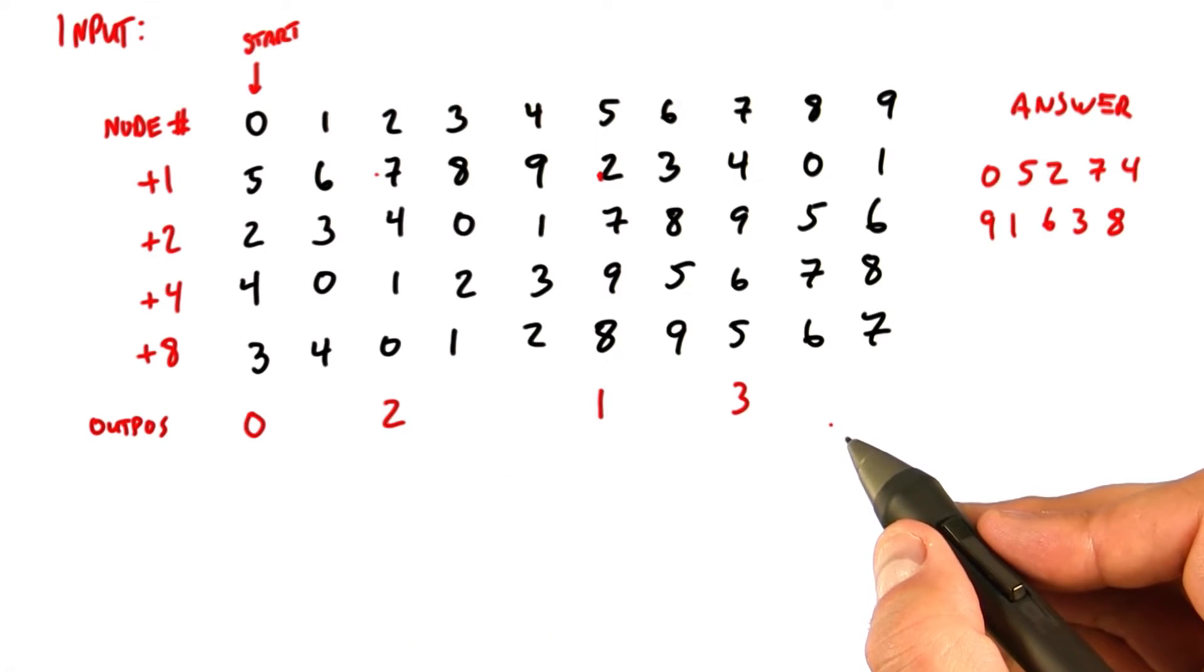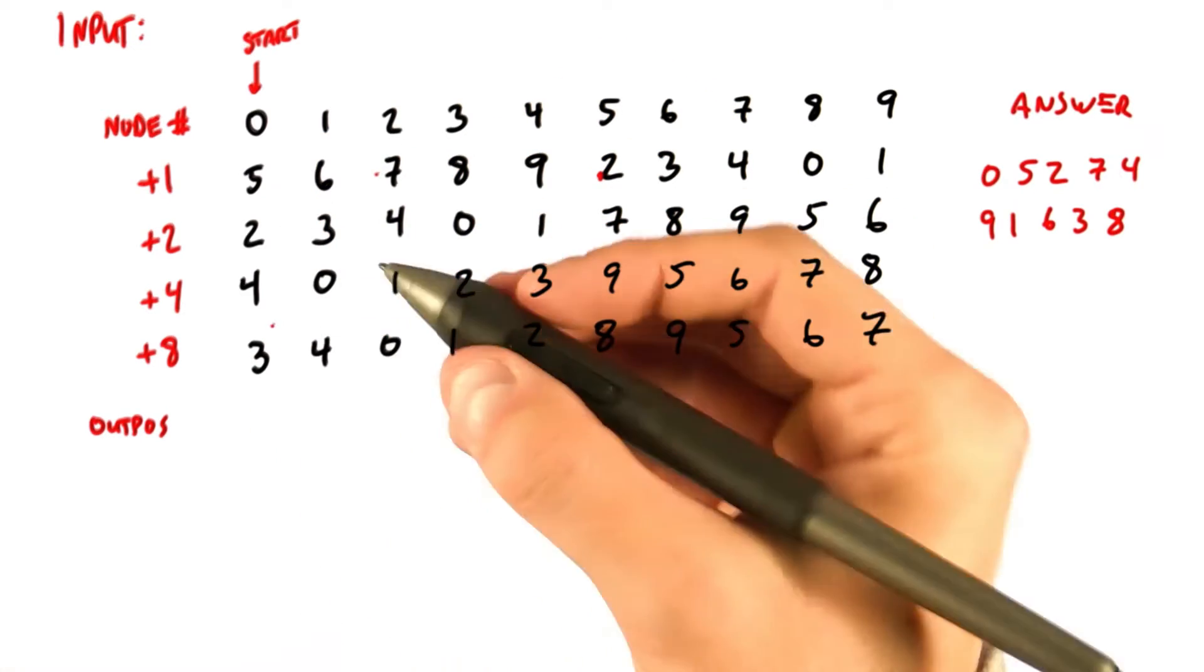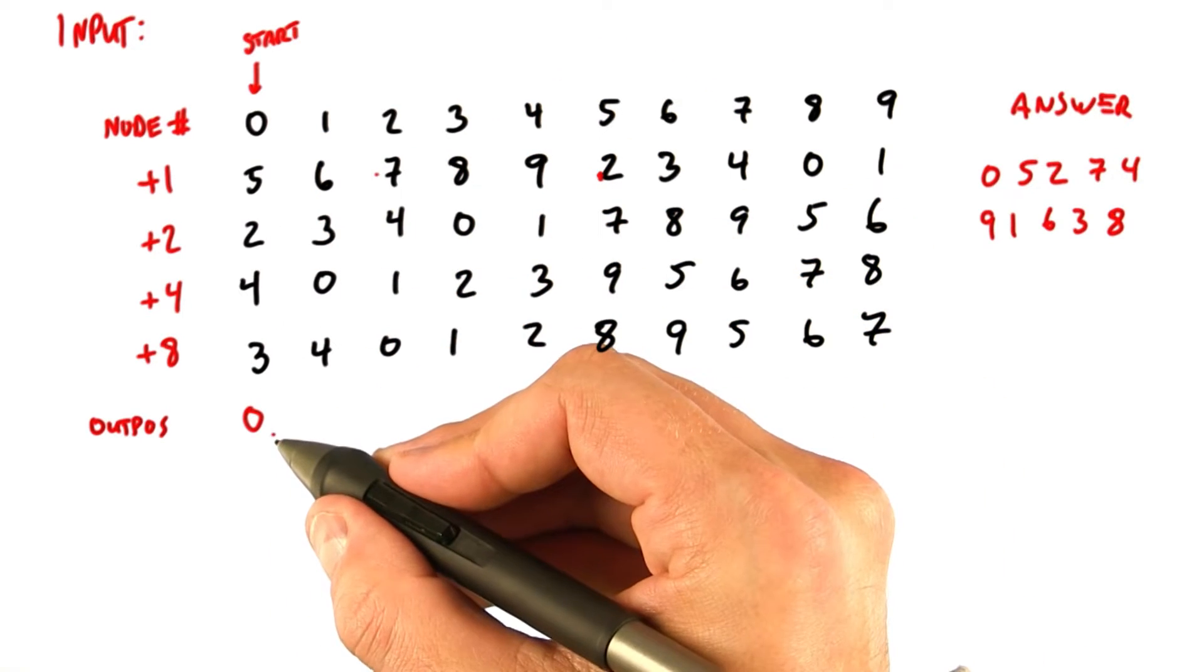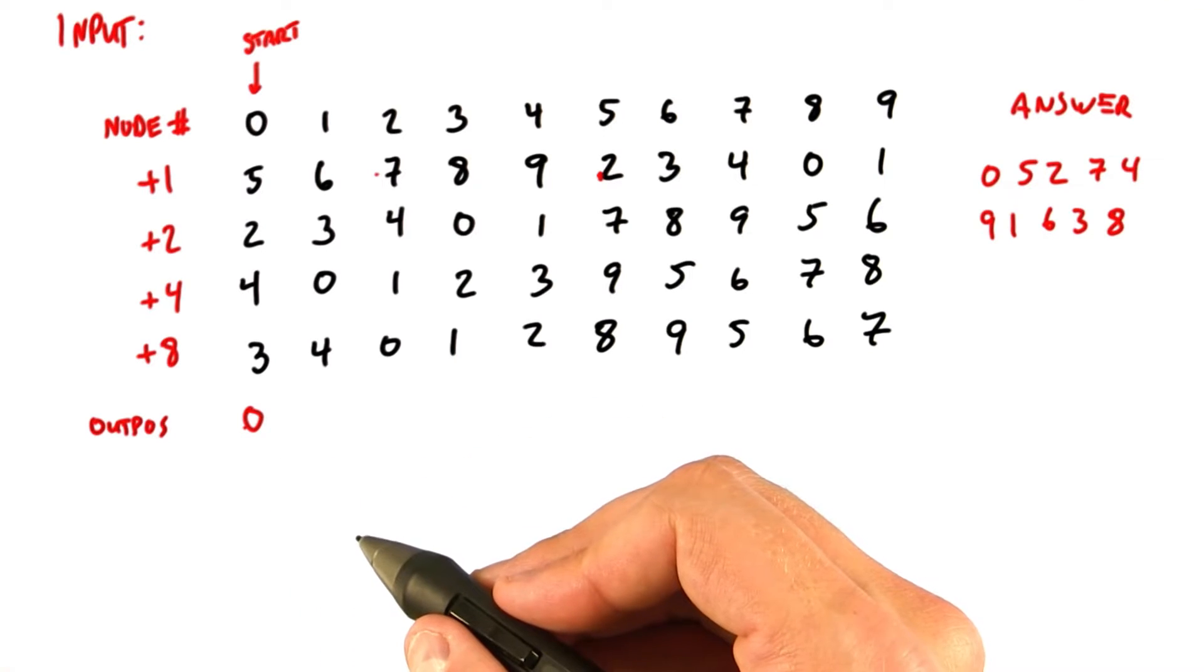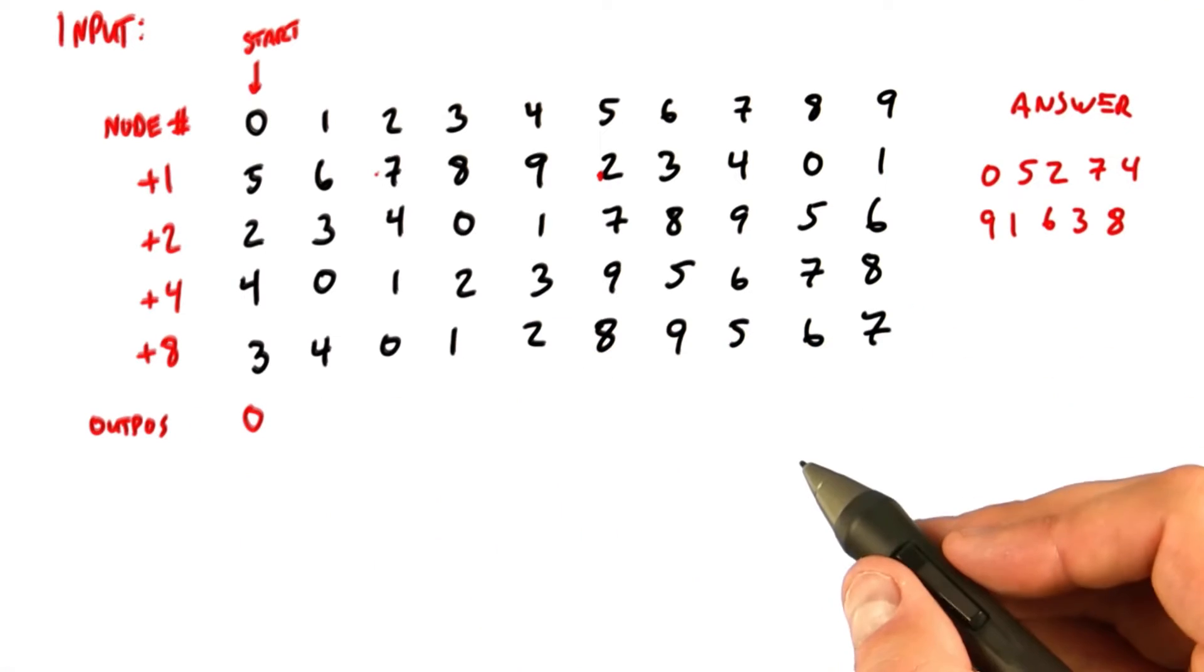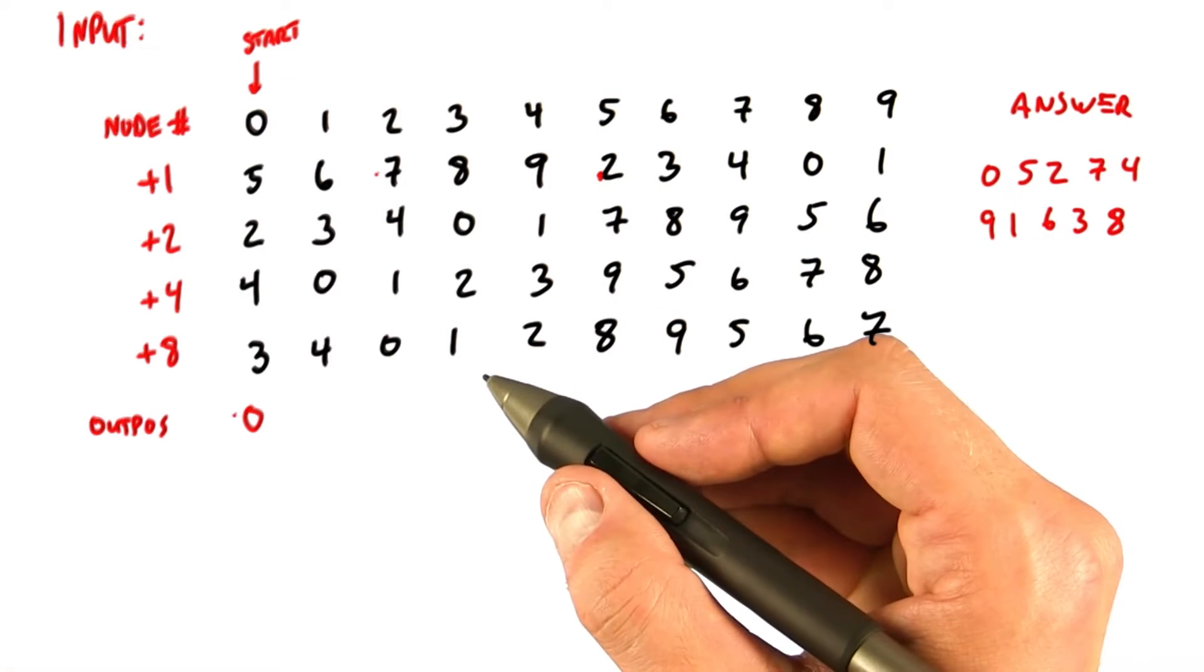We're trying to compute outpause. So when we start this, all we know is that node 0 is in position 0, so we can fill in that outpause right away. Now that node 0 has calculated where it will end up in the output, we're going to consider it awake, but all the other nodes are asleep. A node is awake if it has filled in its value for outpause, otherwise it's asleep.